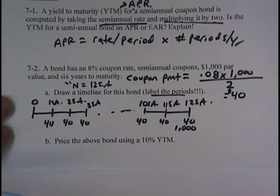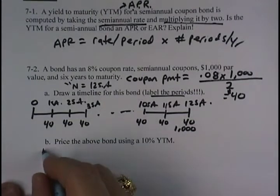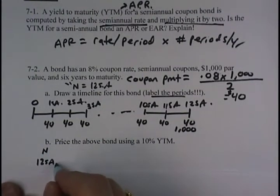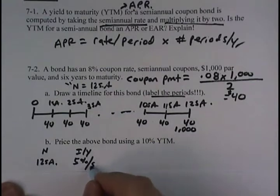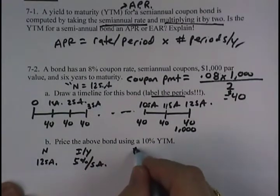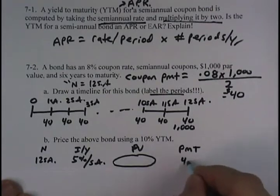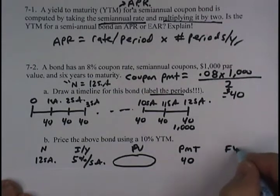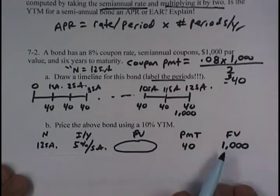Part B says price the bond above using a 10% yield to maturity. Everything is semi-annual for this bond. There are 12 semi-annual periods. I have to discount the cash flows on a semi-annual basis. So that's 5% per semi-annual period. The price or the present value is what I'm going to be computing. Each payment was $40. And that lump sum future value or the bond's par value that it pays at maturity is $1,000.